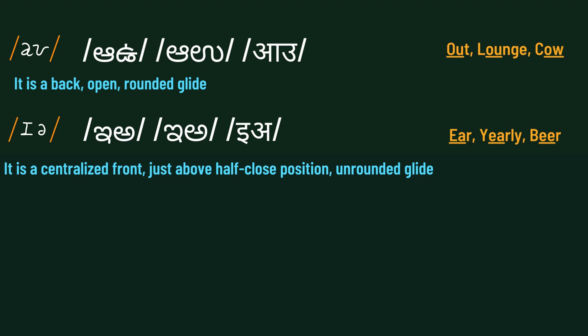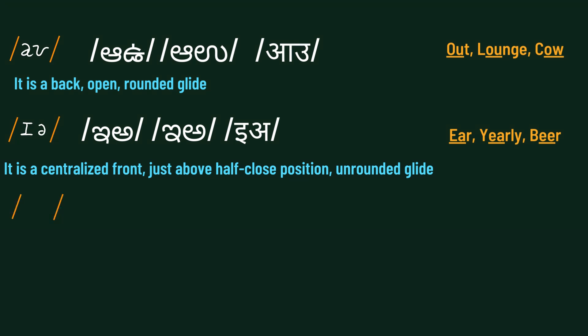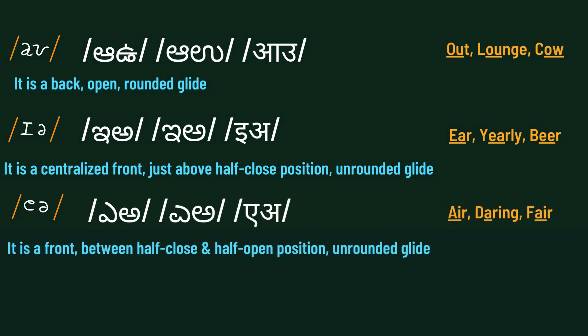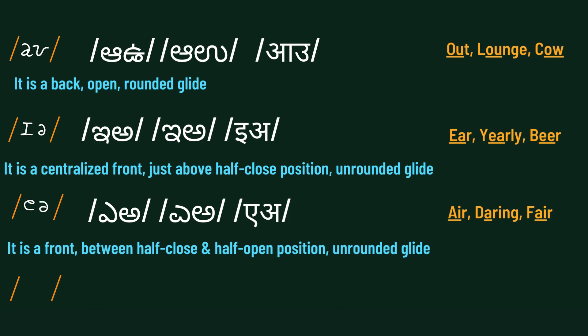The seventh diphthong is /eə/. It is a front, between half-close and half-open position and rounded glide. Examples are: air, daring, fair.